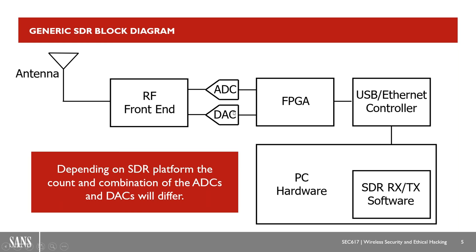This is a generic high-level block diagram of what a software defined radio looks like. You have some sort of antenna, a radio frequency front end, analog to digital converters, digital to analog converters, an FPGA — a field programmable gate array for calculations — and some kind of controller that allows this device to interface with a controlling device, generally a PC running software defined radio software.